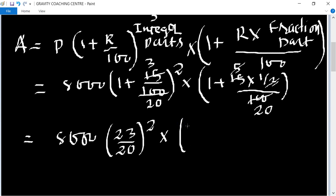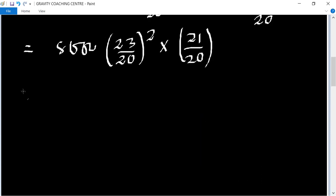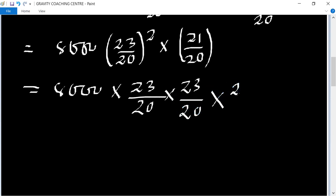...this will become 21/20. Equal to 8000 × (23/20) × (23/20) × (21/20). After multiplying, it will become ₹11,109 which is the amount.